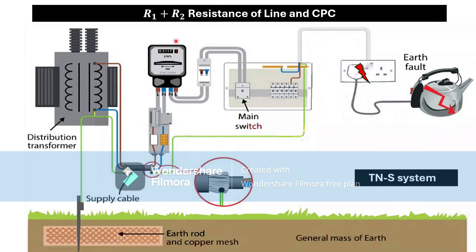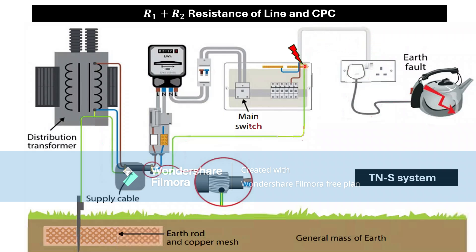R1 plus R2 is the internal resistance of the line and CPC. If we measure the resistance of the line and earth from the final point — because at the final point we get the highest resistance — for example, if you have 10 radial sockets, the 10th socket furthest from the distribution board gives the highest resistance of line and CPC. R1 is the resistance of the line and R2 is the resistance of the CPC from the distribution board to the furthest point.